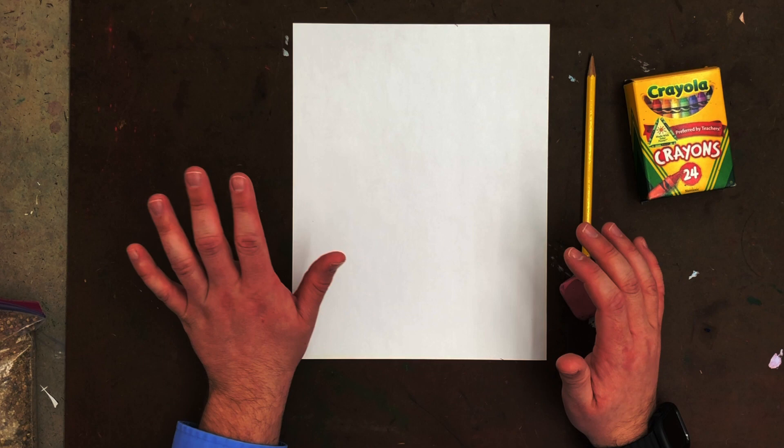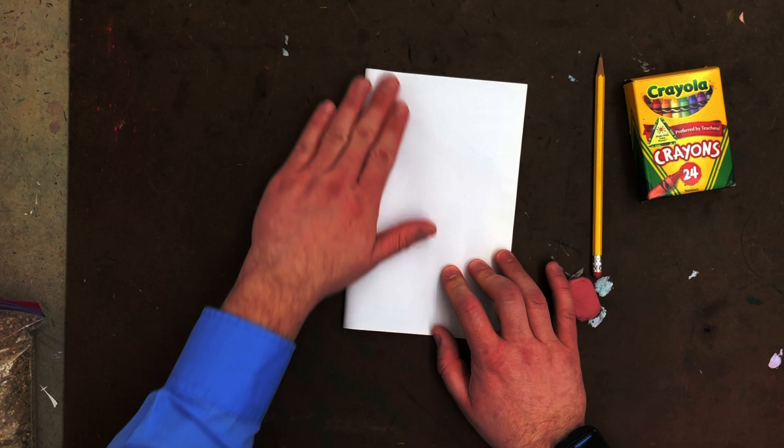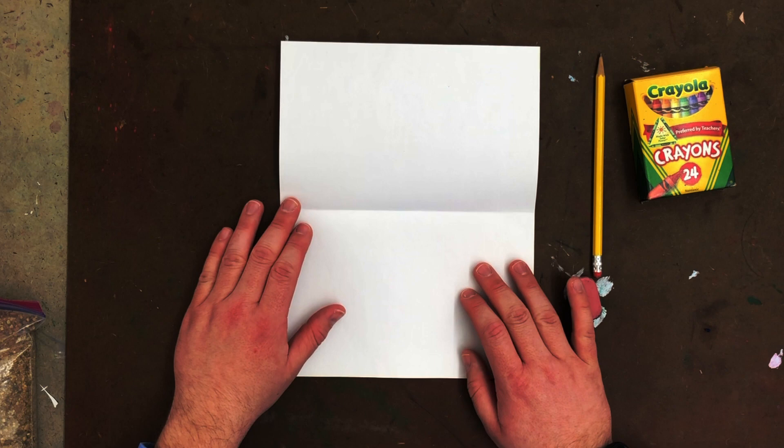There's a couple things that we need to do to get this paper ready. First thing we're going to do is take our white paper and fold it in half just so we can space things out a little bit. Notice I am folding it in half like a book, that way things will fit where they're supposed to go.